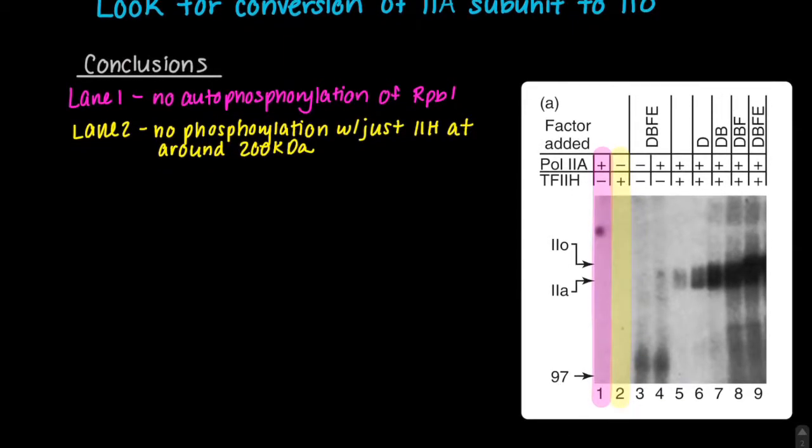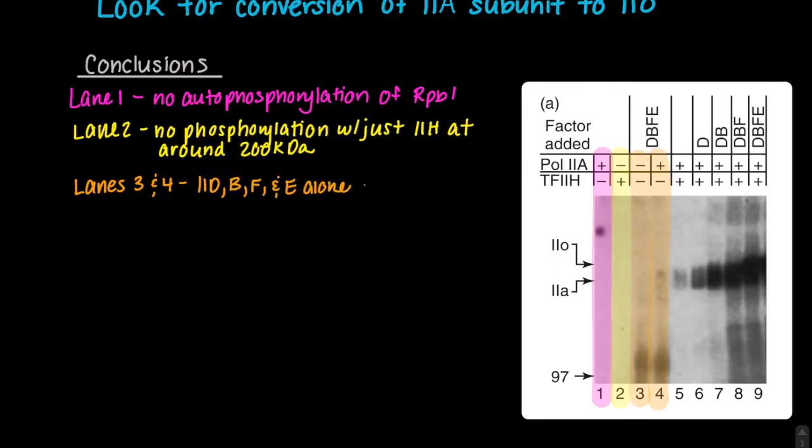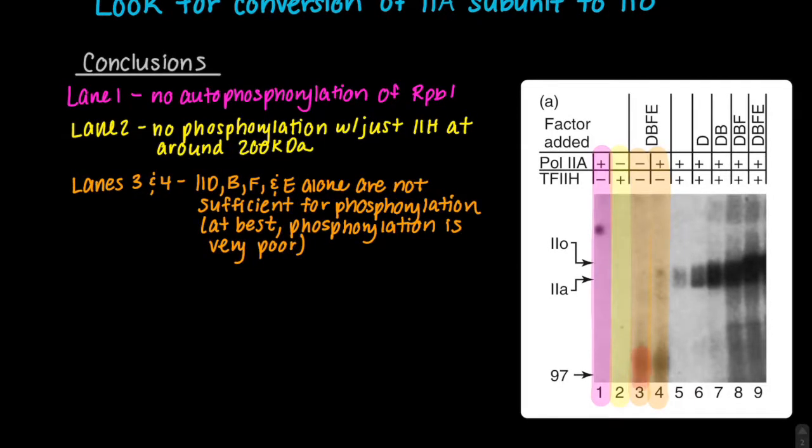For lanes 3 and 4 highlighted in orange, we can see that TF2D, B, F, and E were added along with Pol 2A. TF2H, however, was not added. We can see that TF2D, B, F, and E alone are not sufficient for phosphorylation. Some may argue that there is a faint band in the fourth lane. Others may argue it is just a smudge. Regardless, at best, phosphorylation is very poor.